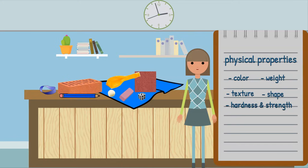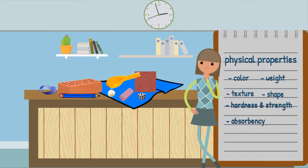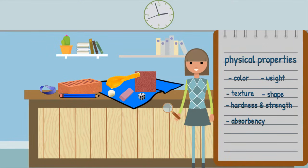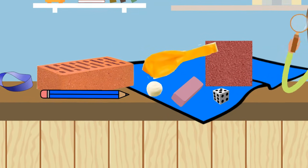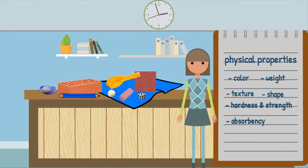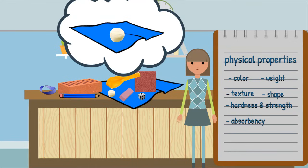Next, let's find objects that are absorbent. When looking at this property, we are looking at how much liquid something can soak up, like a paper towel does with a spill. Which objects would absorb liquid? Yes, the towel and cotton ball would both be absorbent.